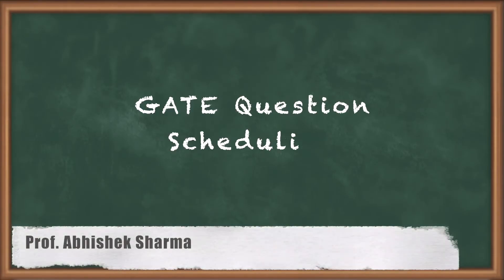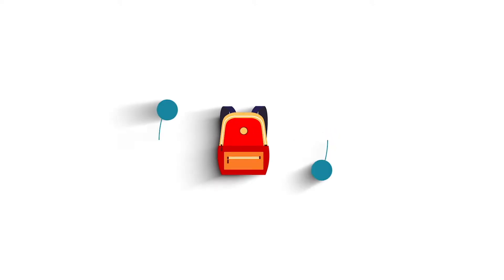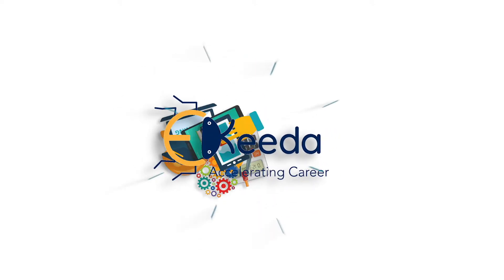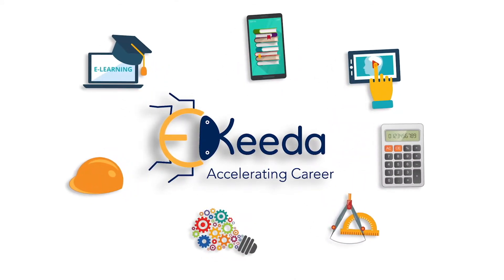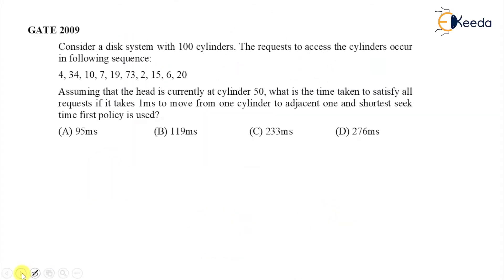Hello friends. In today's class we are going to discuss questions related with disk scheduling algorithms. This is the first question: consider a disk with 100 cylinders. The request to access the cylinder occurs in the following sequence.